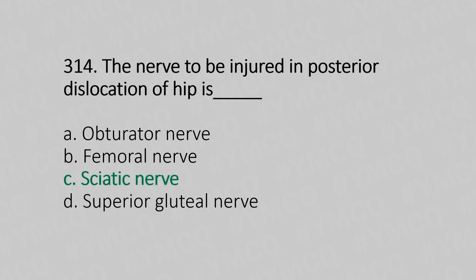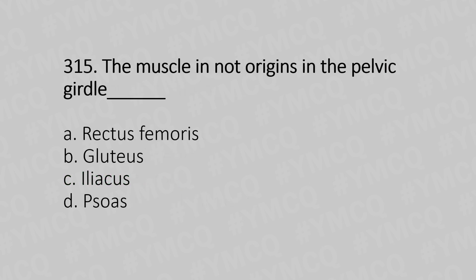Question 315: The muscle that does not originate in the pelvic girdle — Option A: rectus femoris. Option B: gluteal. Option C: iliacus. Option D: psoas. The answer is Option A, rectus femoris.